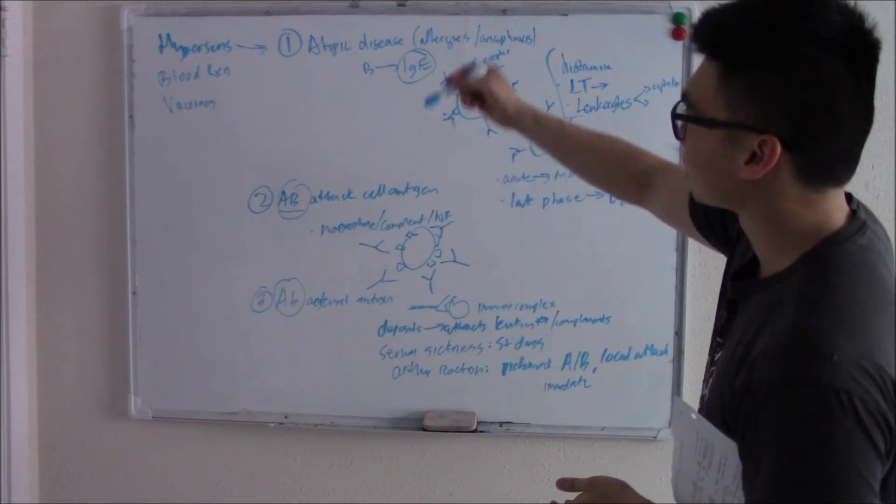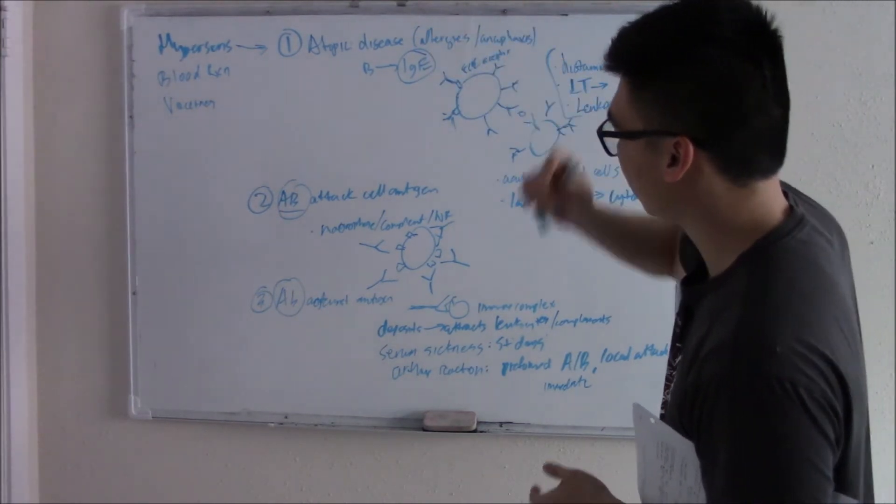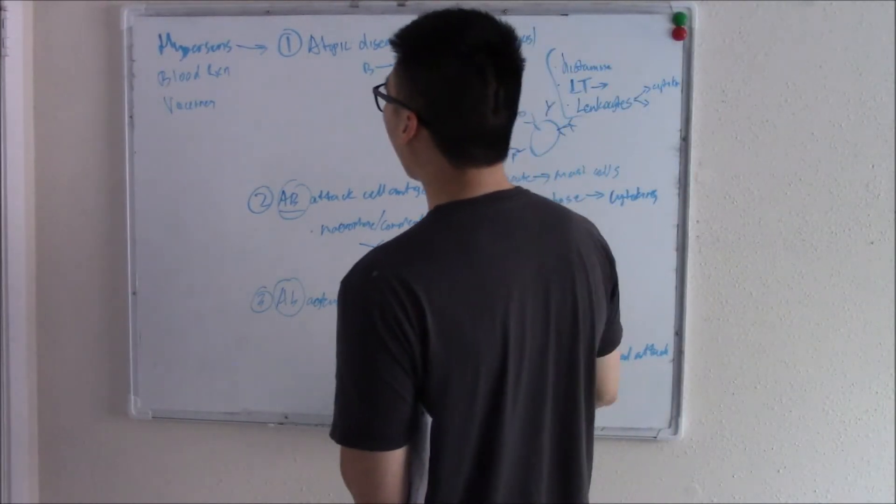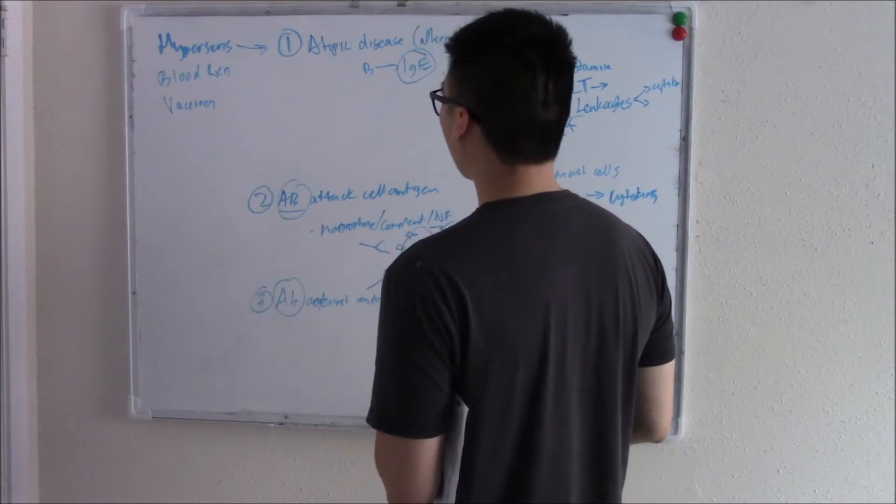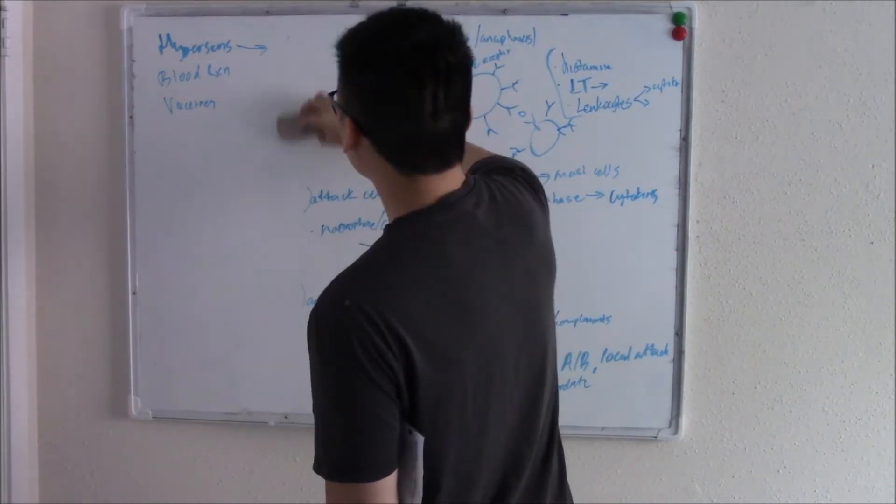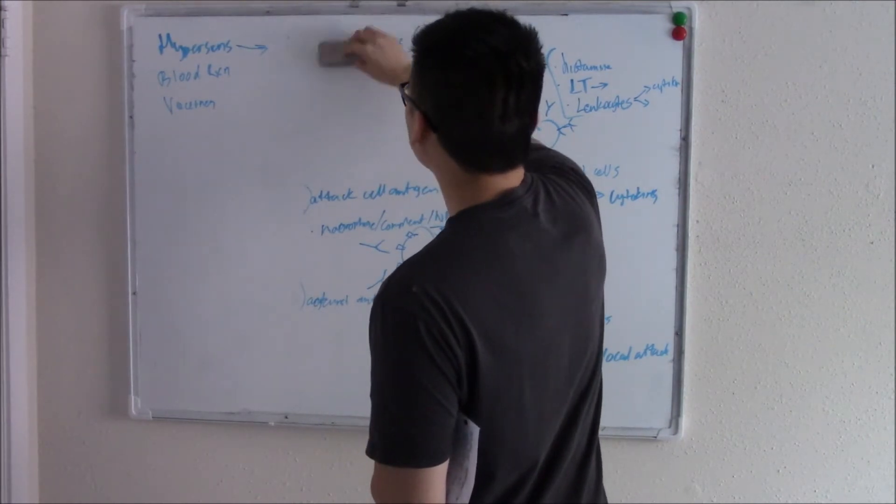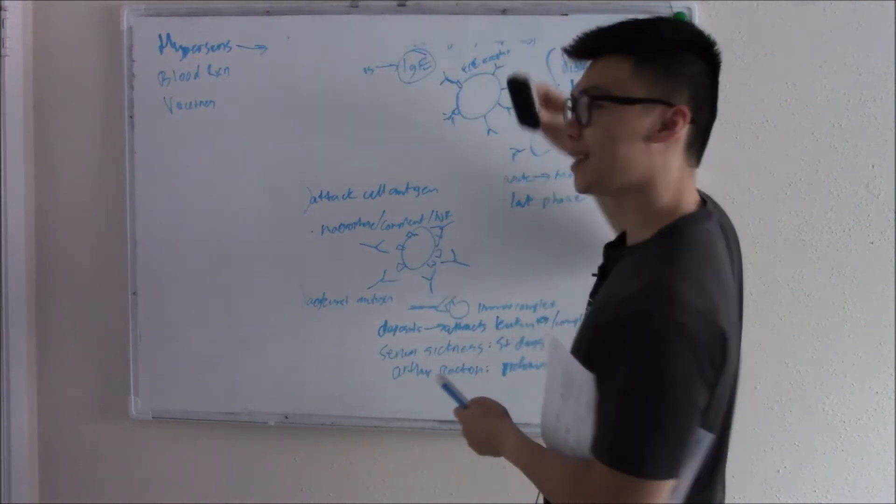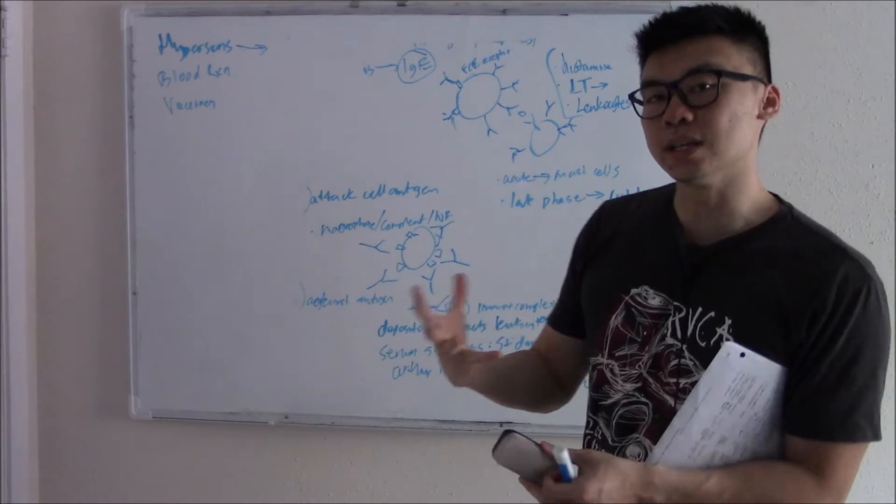The common example is you inject a drug intramuscularly and you have preformed antibodies in that area that attack, makes it swell up, immediate reaction. Immediate, because you have preformed antibodies, you don't have to wait for your B-cells to make new ones. So we talked about hypersensitivity reaction type one, two, three. The last one is type four. Type four is sometimes called delayed, sometimes called antibody independent. It doesn't use antibodies. It's unique in that way. The other three use antibodies.